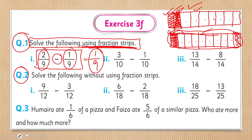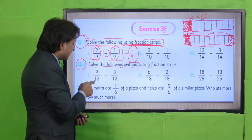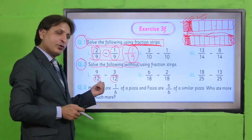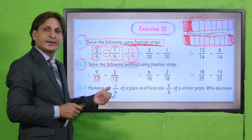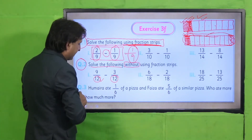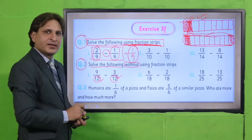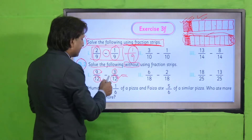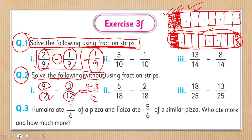अब Question 2 की तरफ आएं। Instruction पढ़ें: 'Solve the following without using fraction strips.' यहाँ आपने denominators देखने हैं। अगर दोनों fractions के denominators same हैं तो numerators को subtract कर देना है। Part 1 में: 9/12 और 3/12 — denominators same हैं — तो 9 minus 3 over 12 = 6/12। यह आपका result आ गया, जिसे आप simplify भी कर सकते हैं।